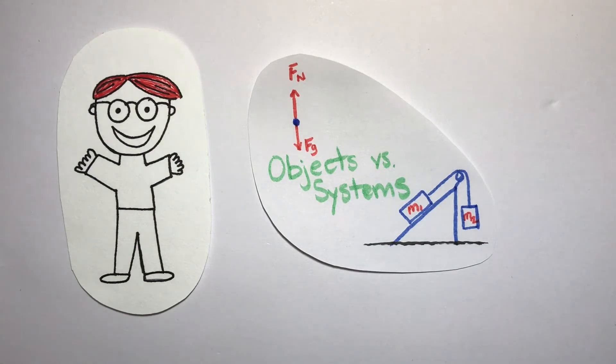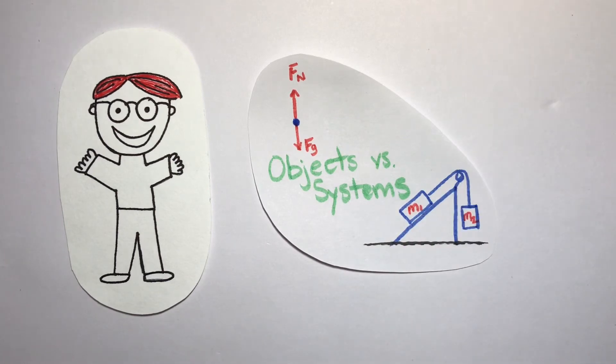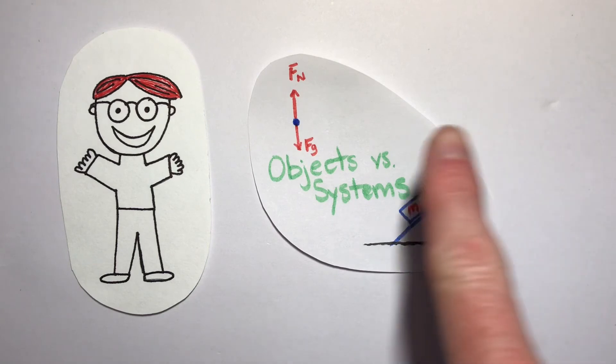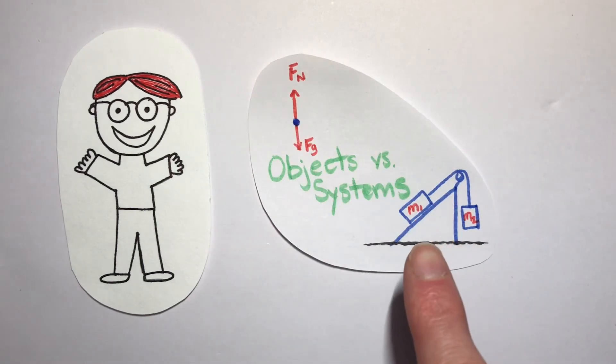Now a system, on the other hand, is basically a combination of objects. Here for example we have two objects, mass 1 and mass 2, on an inclined plane attached to a string on a pulley. Now I would always encourage everybody to look at objects first. Analyze what's happening to an individual object and then put everything together to consider how it's interacting as a system.